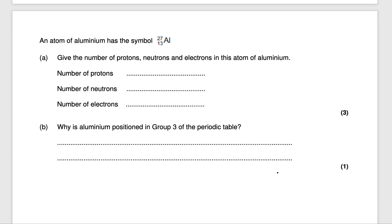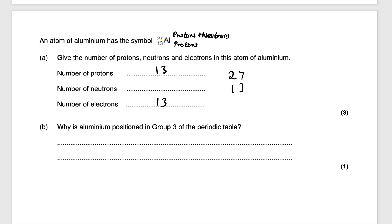Next question: an atom of aluminium has the symbol Al, with mass number 27 and atomic number 13. Give the number of protons, neutrons and electrons. The bottom number gives us the protons, and the top number gives us the protons and neutrons combined. The number of protons is 13, and the number of electrons is also 13 since they're equal to the number of protons. The number of neutrons is the mass number minus the atomic number: 27 − 13 = 14. So the number of neutrons is 14.